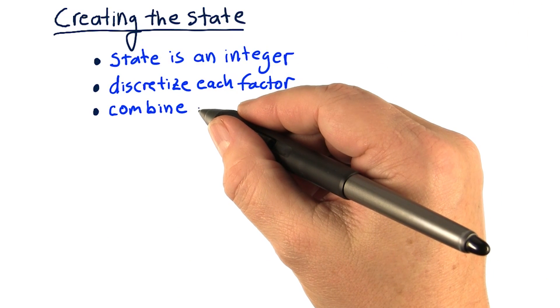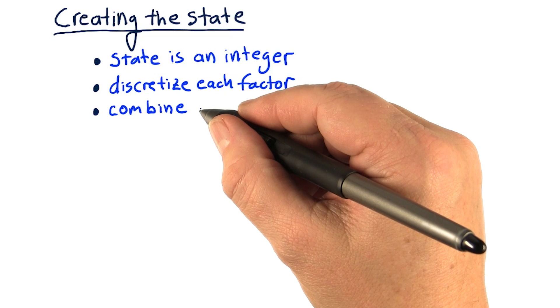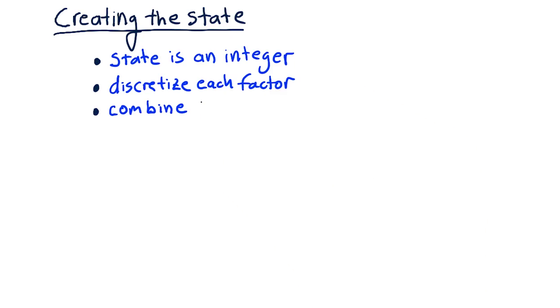Next is to combine all of those integers together into a single number. We're assuming that we're using a discrete state space, and that means more or less that our overall state is going to be this one integer that represents at once all of our factors.